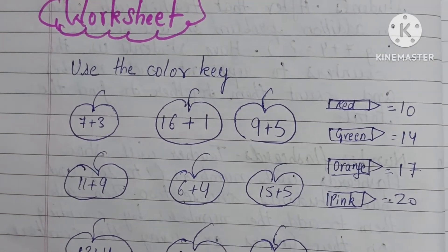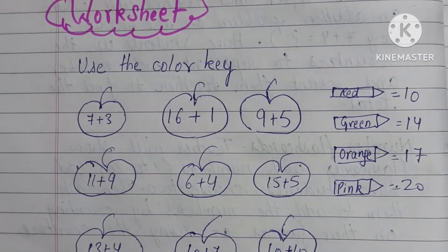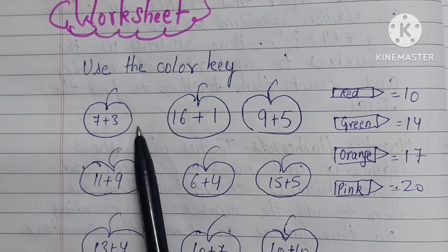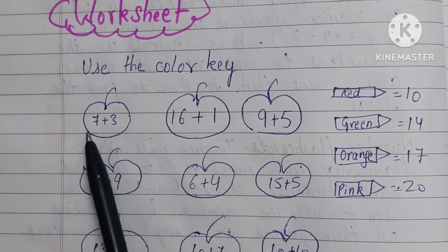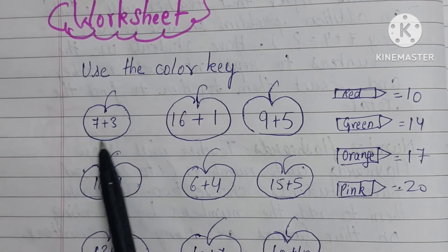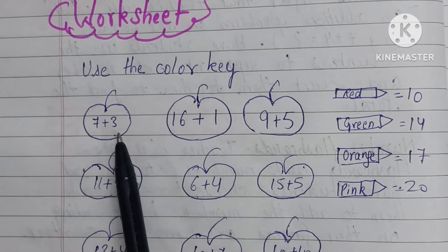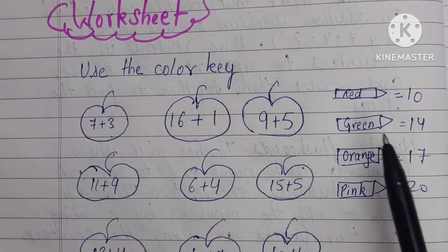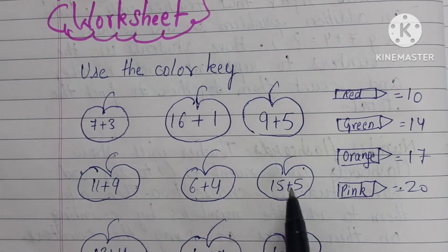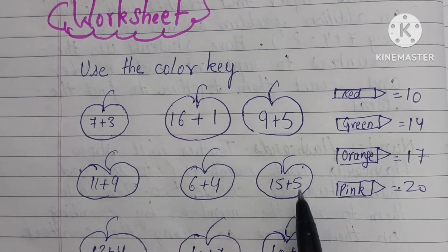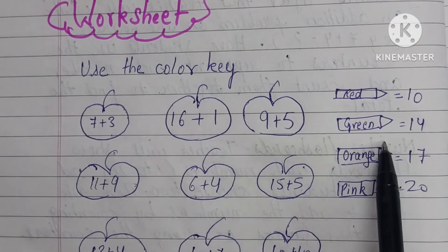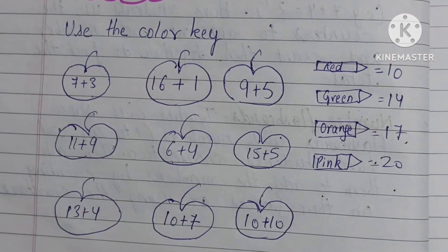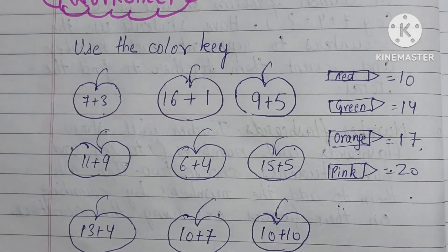Worksheet: Now you can use a color key. Give students a color key like, if you add seven plus three, which equals 10, color red. Or any other drawing you want to give to the students, you can give according to your choice. Green if you add the numbers and get the answer 14, orange for 17, and pink for 20. This is the worksheet you can give students in their notebook as well.